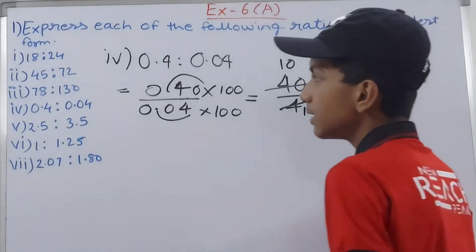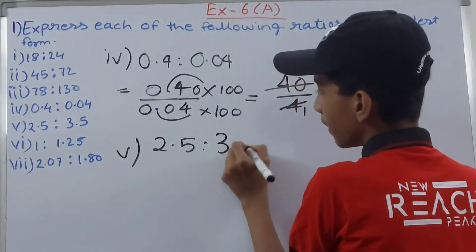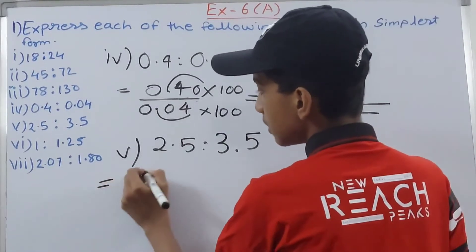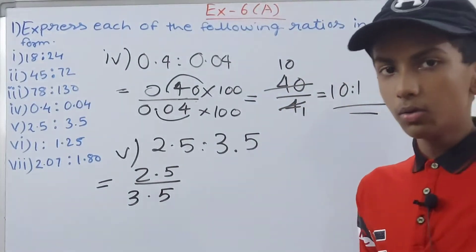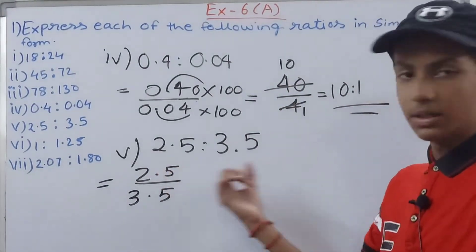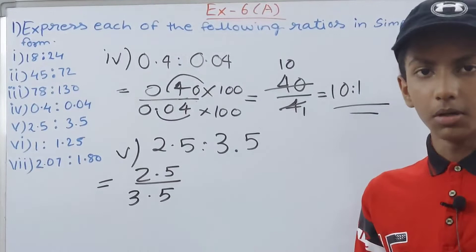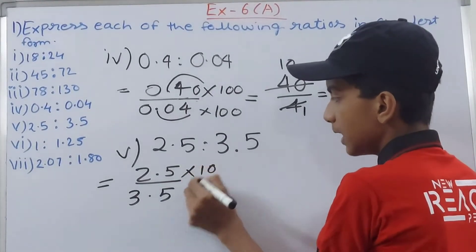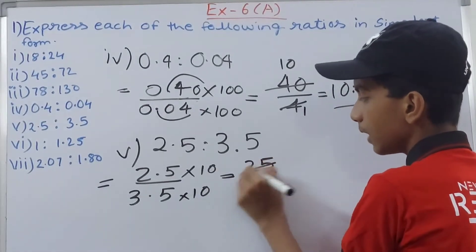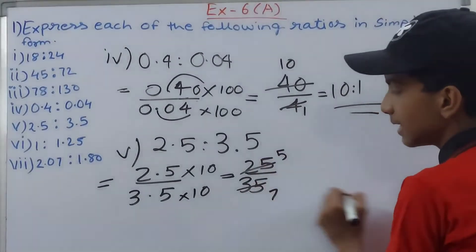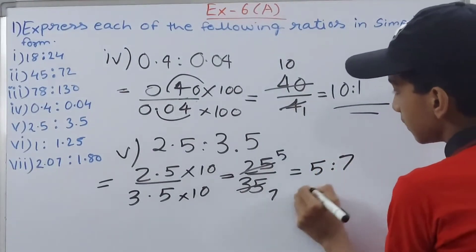Next one is the fifth part, and here we've got 2.5 is to 3.5. So this can be written as 2.5 upon 3.5. Again to cancel the decimals, there is just one place after the decimal point in both of our numbers. So what we will do: multiply this by 10 and this also by 10. So we will get 25 upon 35, and this will be 5 and 7. And then we will have here 5 is to 7.